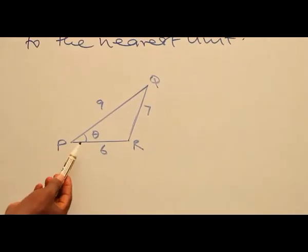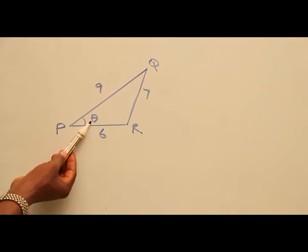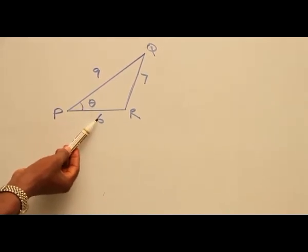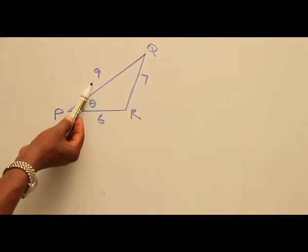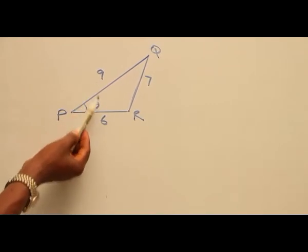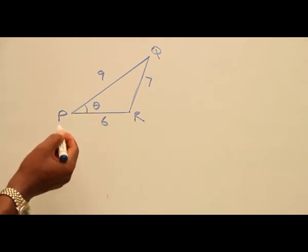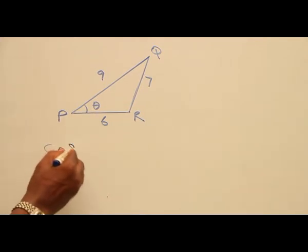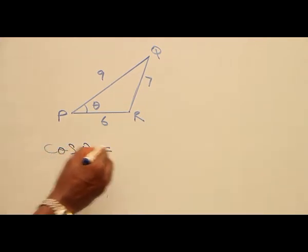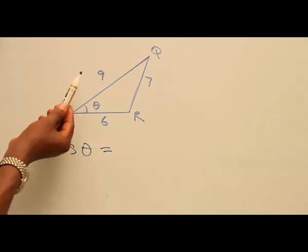You can observe that angle theta is between the two sides of 9 cm and 6 cm. To find this angle, we have cos θ equals the squares of the two sides containing the angle—9² plus 6²—minus the square of the side opposite the angle.